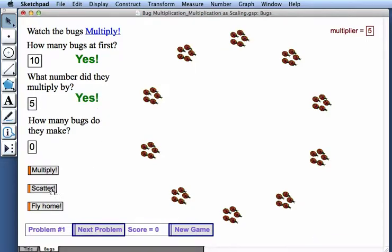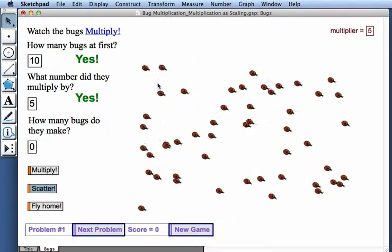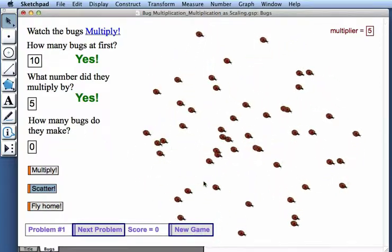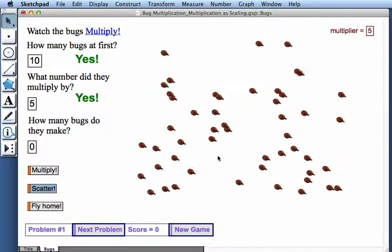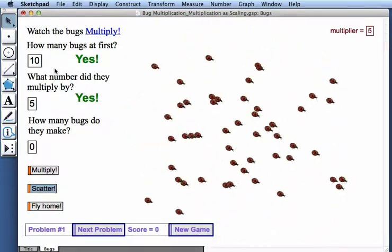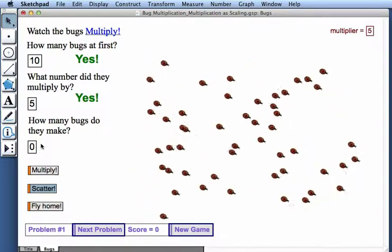Now I'm going to press Scatter. My bugs begin to swarm around the screen. How many bugs in total are there? It's really hard to count right now with the bugs all moving, but there were 10 bugs at first, and they multiplied by 5, so I think there are 50 bugs altogether.